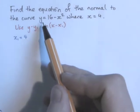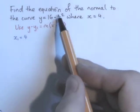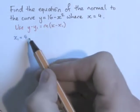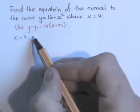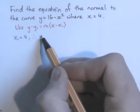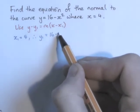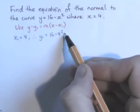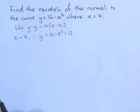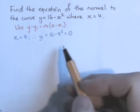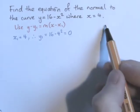I can get y₁ by substituting x₁ into the equation of the curve. So y₁ is 0. Before we go any further, let's just draw a quick sketch.